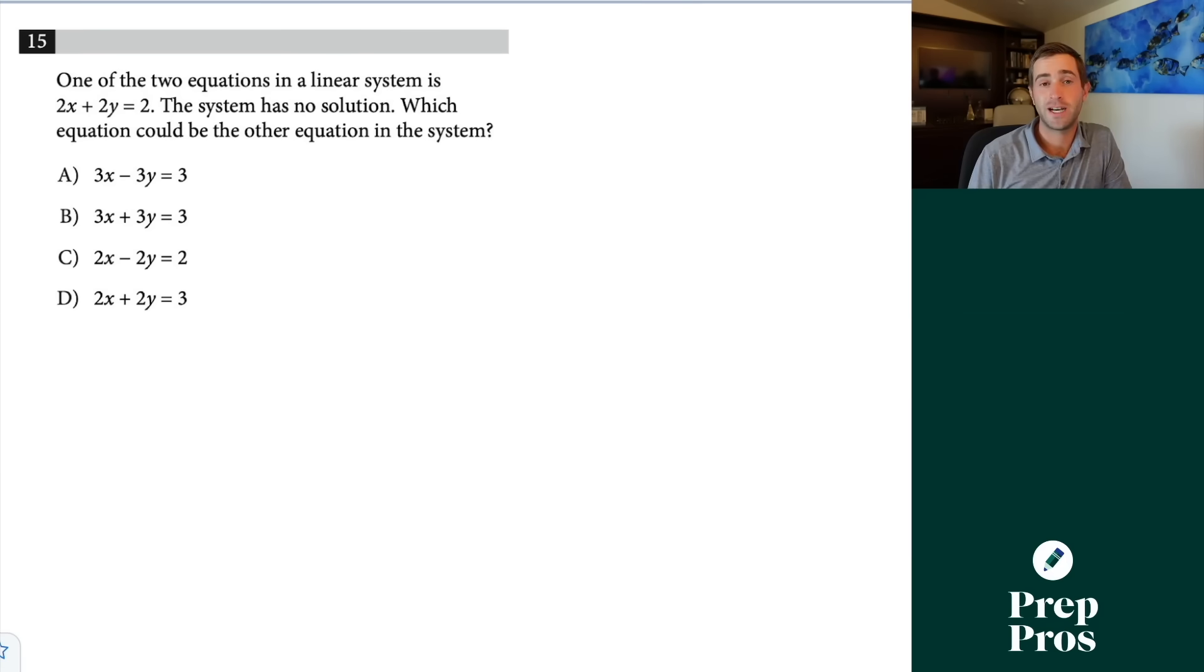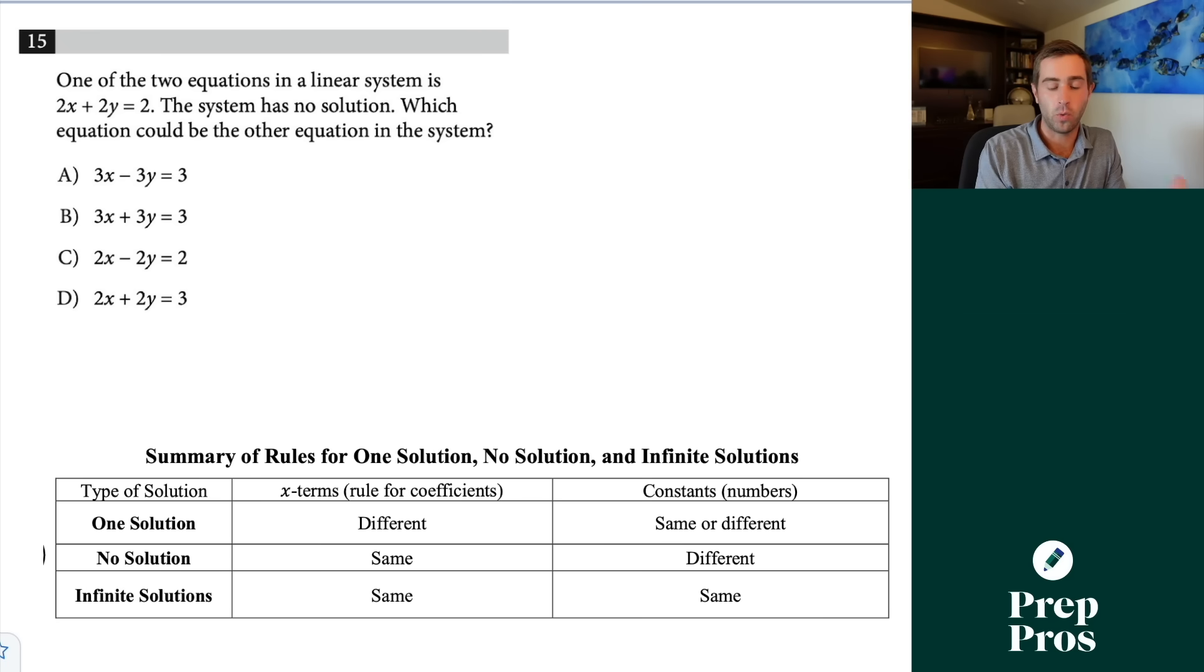Now the next thing you're going to see on your tests are questions about interpreting constants. These are most commonly questions about one solution, no solution, and infinite solutions with linear equations. I'm going to pop on the screen a table from my book, and then we're going to work through this question. Here we see one of the two equations in a linear system is 2x plus 2y equals 2. The system has no solution. Which equation could be the other equation in the system? Well, what we know for no solutions is our x values or slopes must be the same, but our y intercepts must be different.